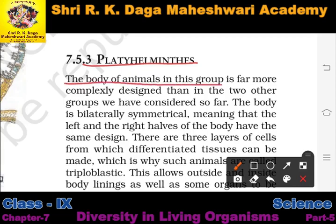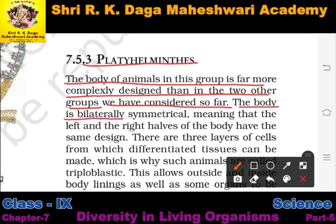The body of the animals in this group is far more complexly designed than in the two other groups. Their body design was more complex as compared to the other two groups we have considered so far. The body is bilaterally symmetrical, meaning that the left and the right half of the body have the same design.